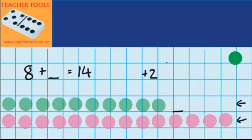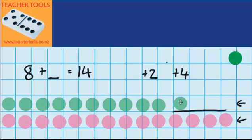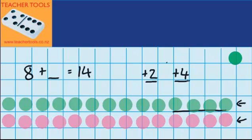I can see that I'm going to have to add another 4 counters. Let's see what that looks like with materials — there's 1, 2, 3, 4. So in total I added 2 and then I added another 4, which means in total I added 6. So 8 plus 6 equals 14.